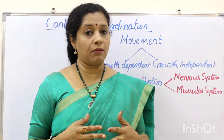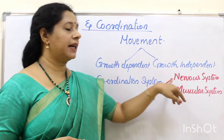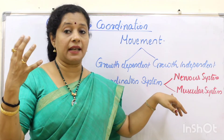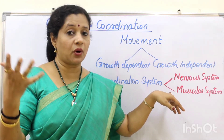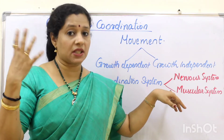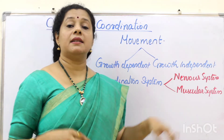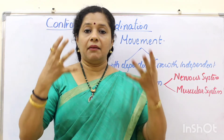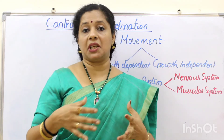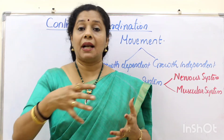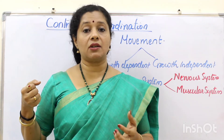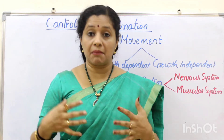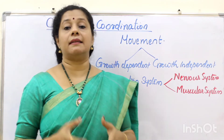There should be a coordinated system in our body, which is controlled by two systems. One is our nervous system, which responds to stimuli from the environment — receiving the stimuli and responding to it. The stimuli are the messages or triggers coming from the environment. The second is the muscular system, because when I touch a hot object, my nervous system detects the danger, but I need muscles to immediately withdraw my hand from the heat.